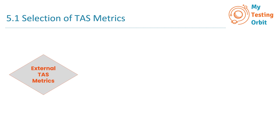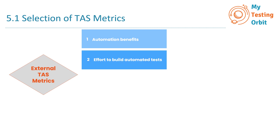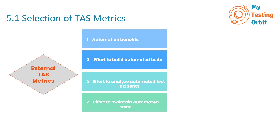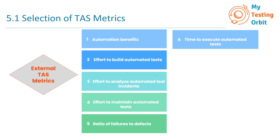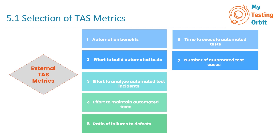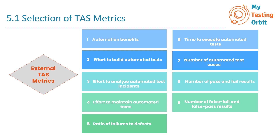Let's look at all the external TAS metrics, and then go through each one in detail. They are: (1) automation benefits, (2) effort to build automated tests, (3) effort to analyze automated test incidents, (4) effort to maintain automated tests, (5) ratio of failures to defects, (6) time to execute automated tests, (7) number of automated test cases, (8) number of pass and fail results, (9) number of false fail and false pass results, and (10) code coverage.